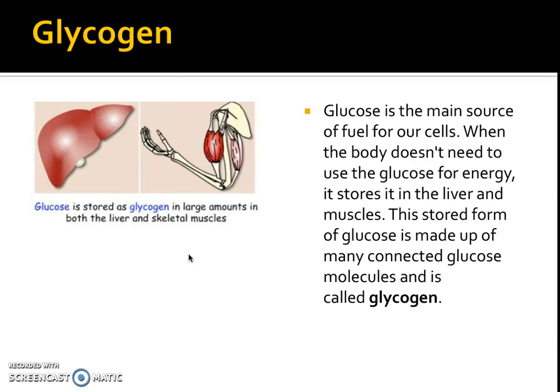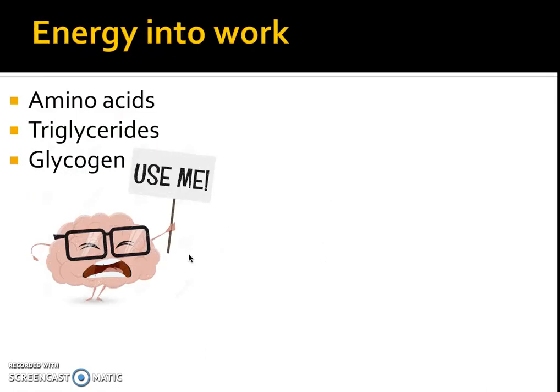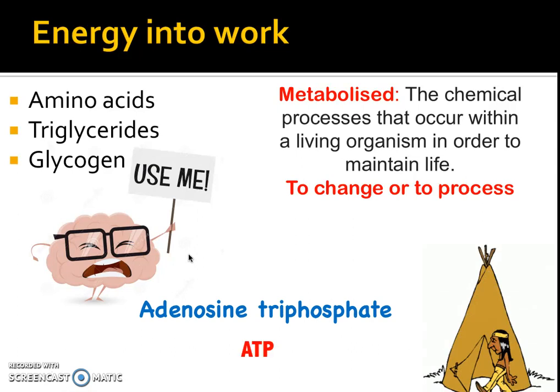Glucose not stored is called glycogen. Once we have all three — amino acids, triglycerides, and glycogen — we need to metabolize them. To metabolize something is the chemical process that occurs in living organisms that maintains life; it's to change something or make it go through a process. We convert these into something called adenosine triphosphate, also known as ATP.